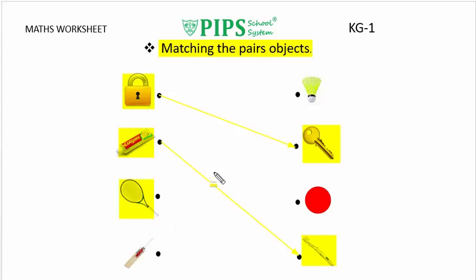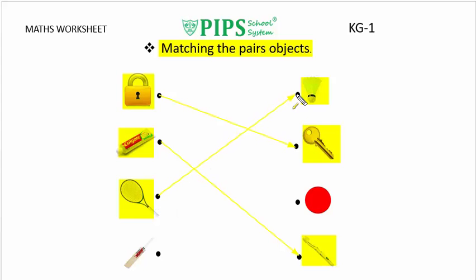Its pair is shuttlecock. Let us match the racket with its pair like this.